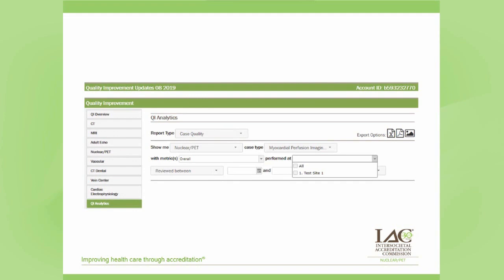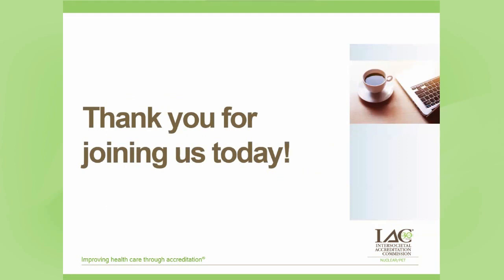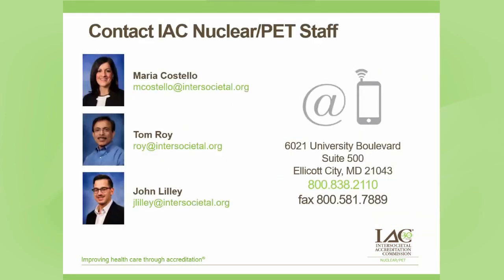The QI tool will help your facility identify any quality improvement issues and ways to continuously improve. It helps you identify those little issues that you may not see on a day-to-day basis. If you have any questions, feel free to reach out to us. You can contact any one of the IAC staff — myself, Tom Roy, or John Lilly — by email or phone. John Lilly will be available after this presentation for live questions. Thank you again for joining me today.